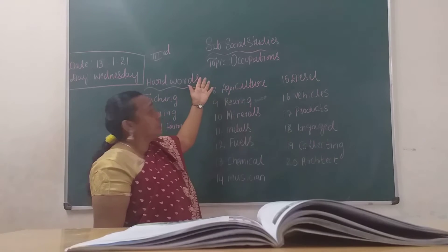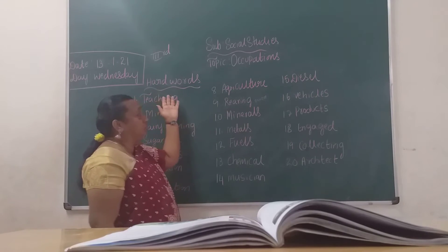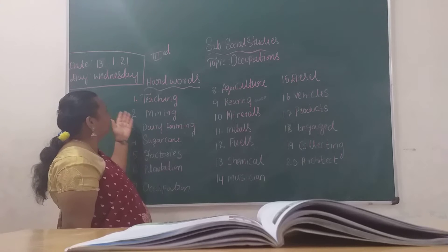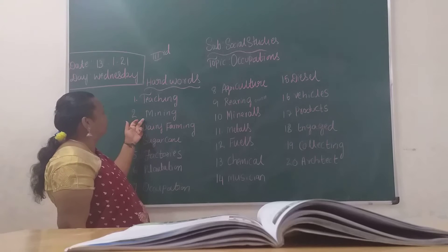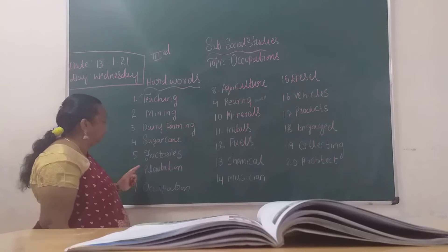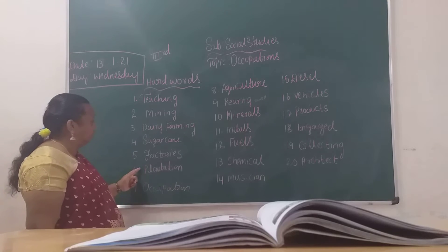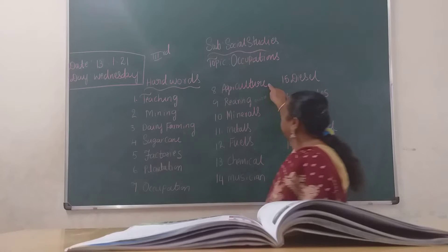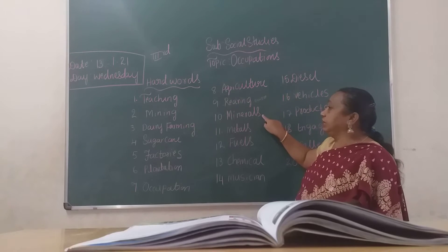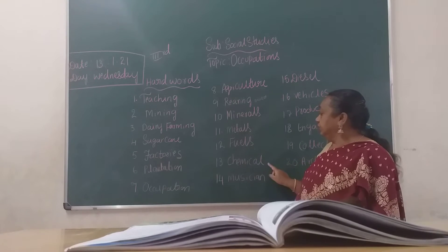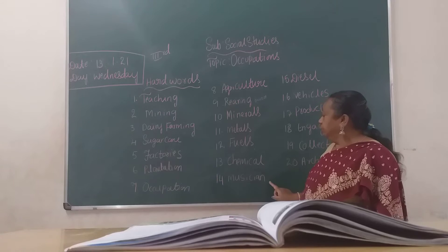Now, lesson over my children. I am going to give you hard words. First one: teaching, second one is mining, third one: dairy farming, sugar cane, factories, plantation, occupation, agriculture, rearing, minerals, metals, fuels, chemical, physical.